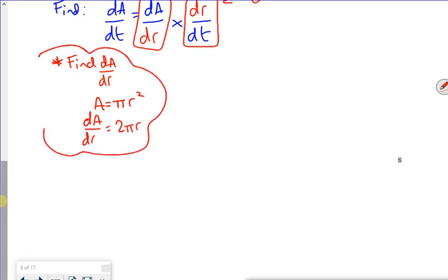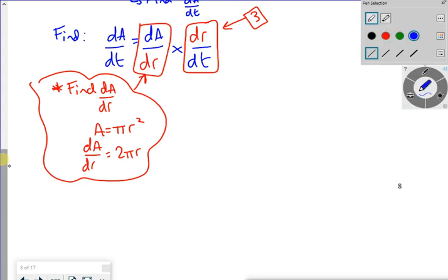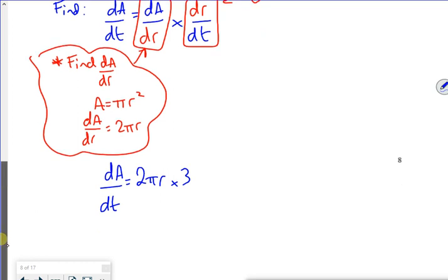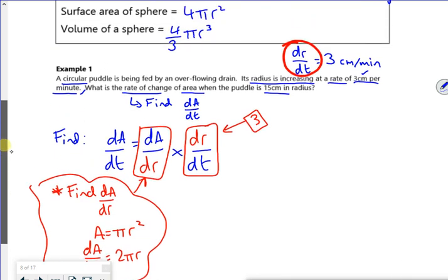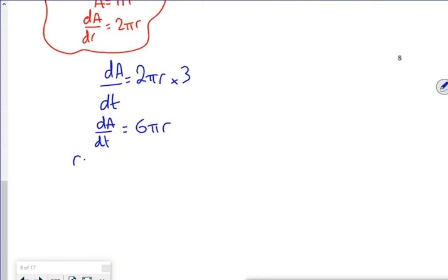And here it's saying differentiate the area with respect to the radius. So I can do this. I can find dA by dr because I know that A is πr². So dA by dr is 2πr. So dA by dt is dA by dr times dr by dt. So dA by dt is 2πr times by 3. So dA by dt is 6πr. But the question says, find it when the radius is 15. So if I put in r is 15 here, dA by dt is 6π(15), so that's going to be 90π.